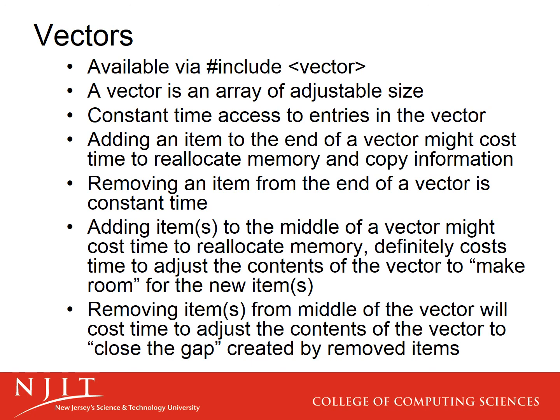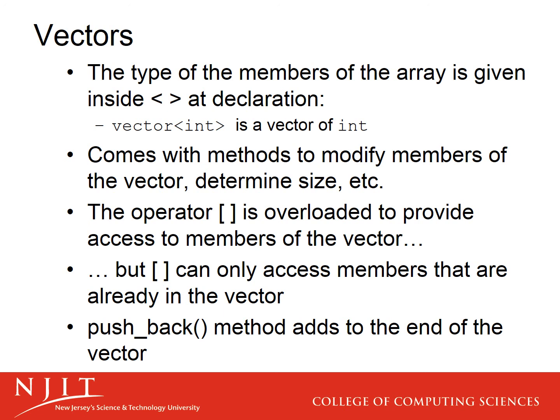Everything you learned about arrays and computational complexity applies to vectors as well. You give the type of what's in the vector when you declare it — so vector less-than int greater-than means it's a vector of ints. A vector comes with methods to modify members, determine the size, tell what its capacity is, change its capacity, resize it, and clear it. It has array semantics, and the way they handle that is by overloading the square bracket operator so that operator[] provides access to members of the vector. However, it can only access members that are already in the vector.